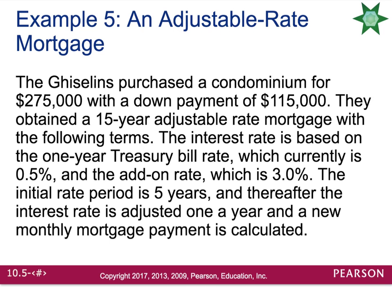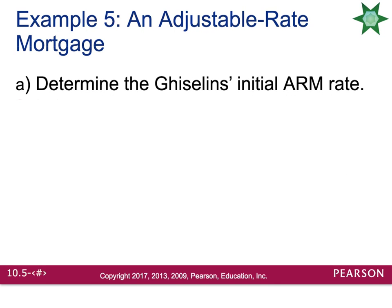Let's look at an example of an adjustable rate mortgage. The Gislens purchased a condominium for $275,000 with a down payment of $115,000. They obtained a 15-year adjustable rate mortgage with the following terms: the interest rate is based on the one-year Treasury bill rate, currently 0.5%, and the add-on rate is 3%. The initial rate period is five years, and thereafter the interest rate is adjusted once a year and a new monthly mortgage payment is calculated.